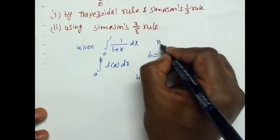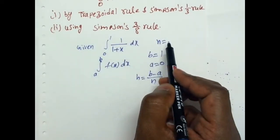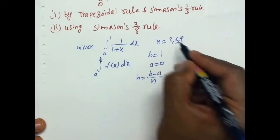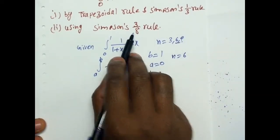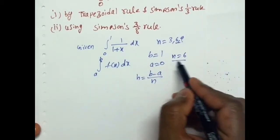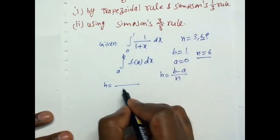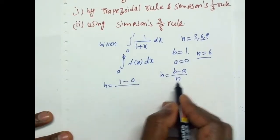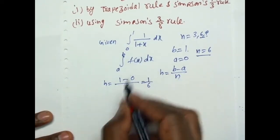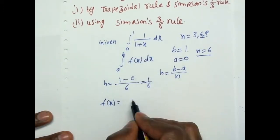We have to assume an n value. n should be a multiple of 3 only — in Simpson's 3/8 rule, the number of subdivisions must be either 3, 6, 9, etc. Here I am taking n equal to 6. Now find the h value: h equals (b minus a)/n = (1 minus 0)/6 = 1/6. And f(x) equals 1/(1+x), which is the y value.